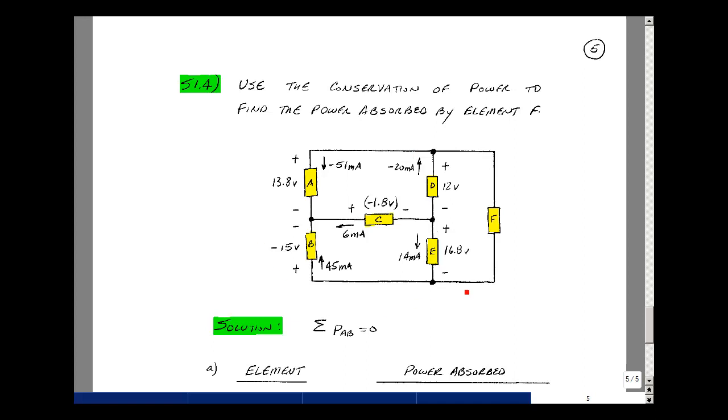Suppose we're given the following circuit, where we know the voltage across and the current through all but one element. Let's use the conservation of power theorem to solve for the power absorbed by element F.